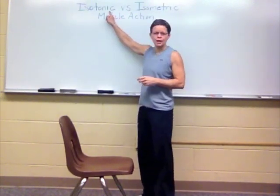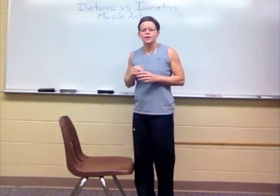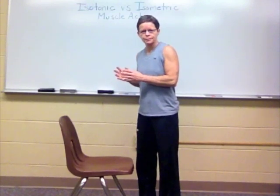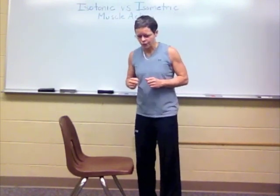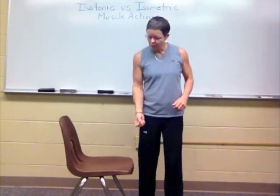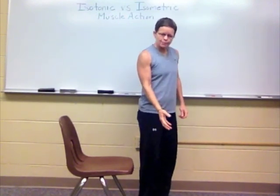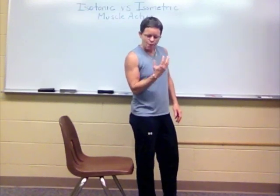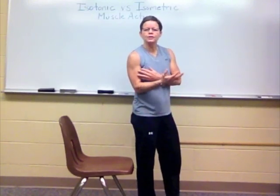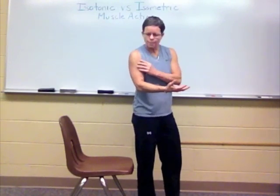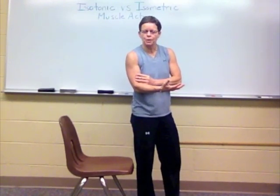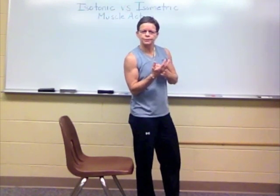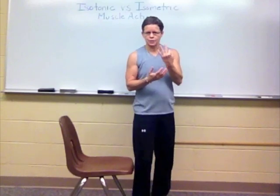Let's talk about isotonic muscle contraction. There are two types: concentric and eccentric. Let's look at concentric first. Going back to the bicep curl example — pick up this imaginary dumbbell and pull it up toward your chest. That would be executing a concentric contraction of, for example, the biceps brachii, the anterior muscle in our arm.